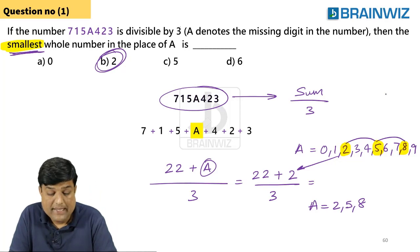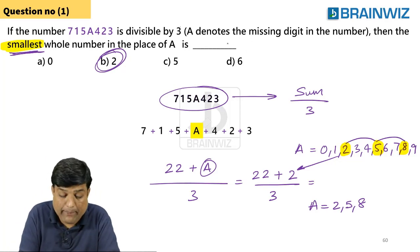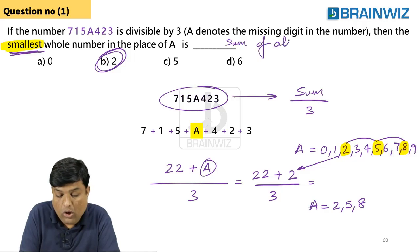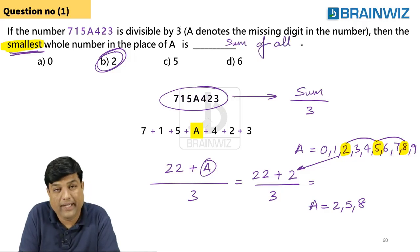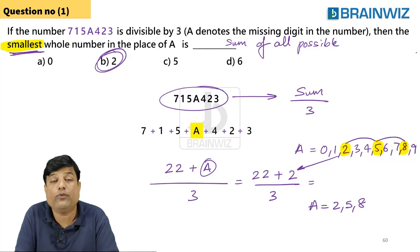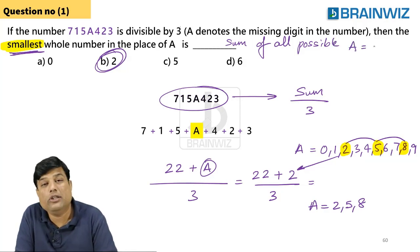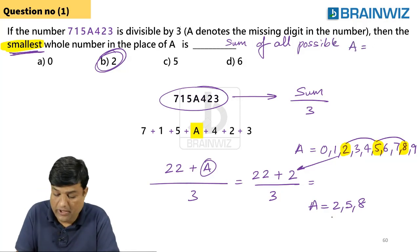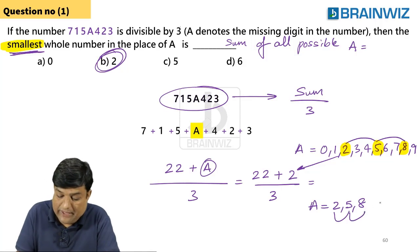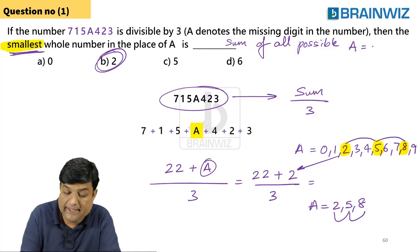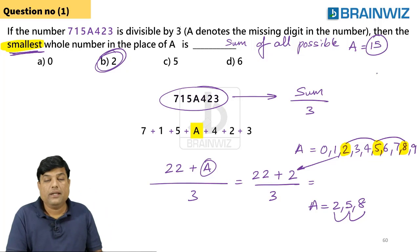Sometimes they may also ask: what is the sum of all possible values of A? That would be 2+5+8 = 15. This kind of question has been given in TCS.